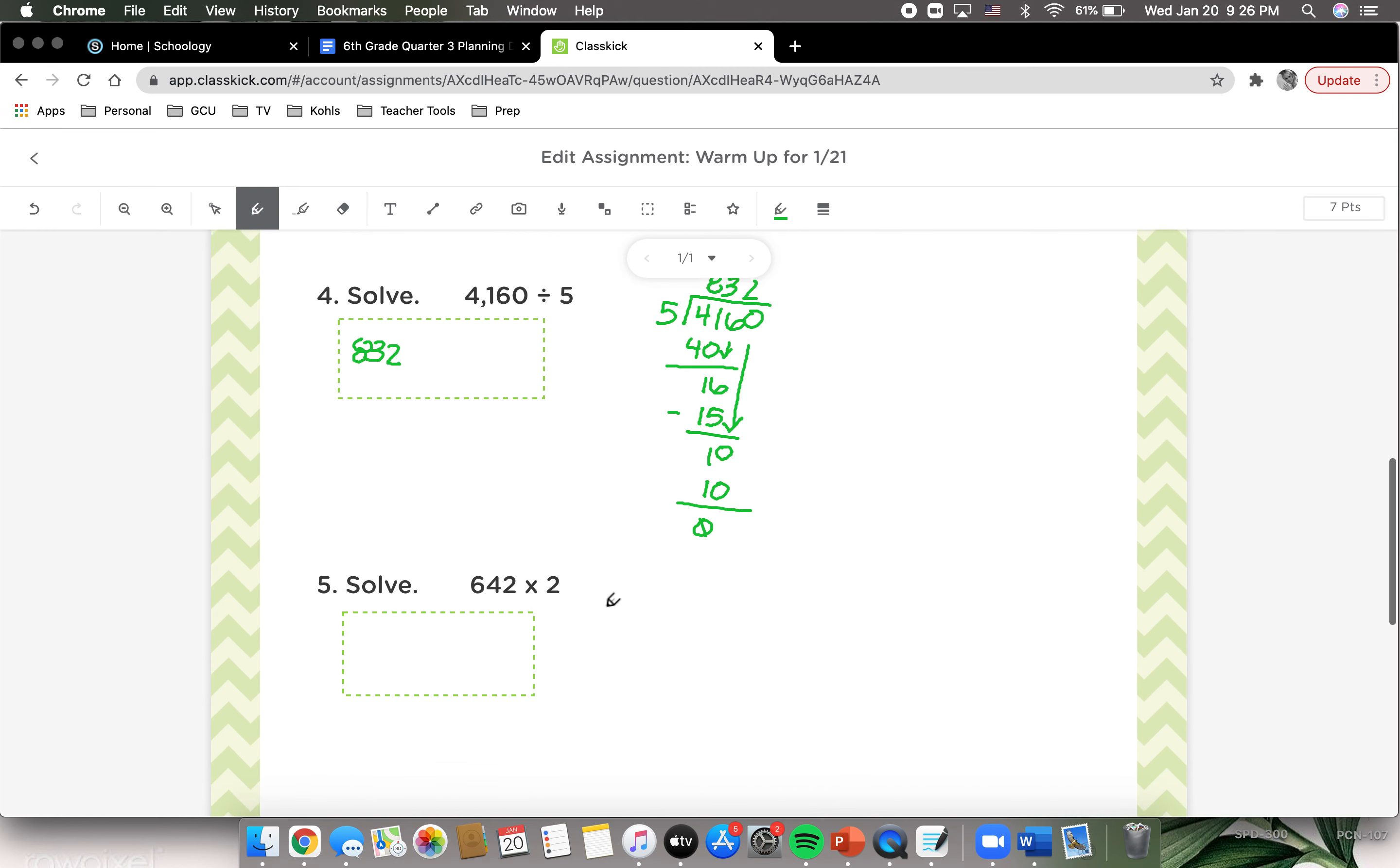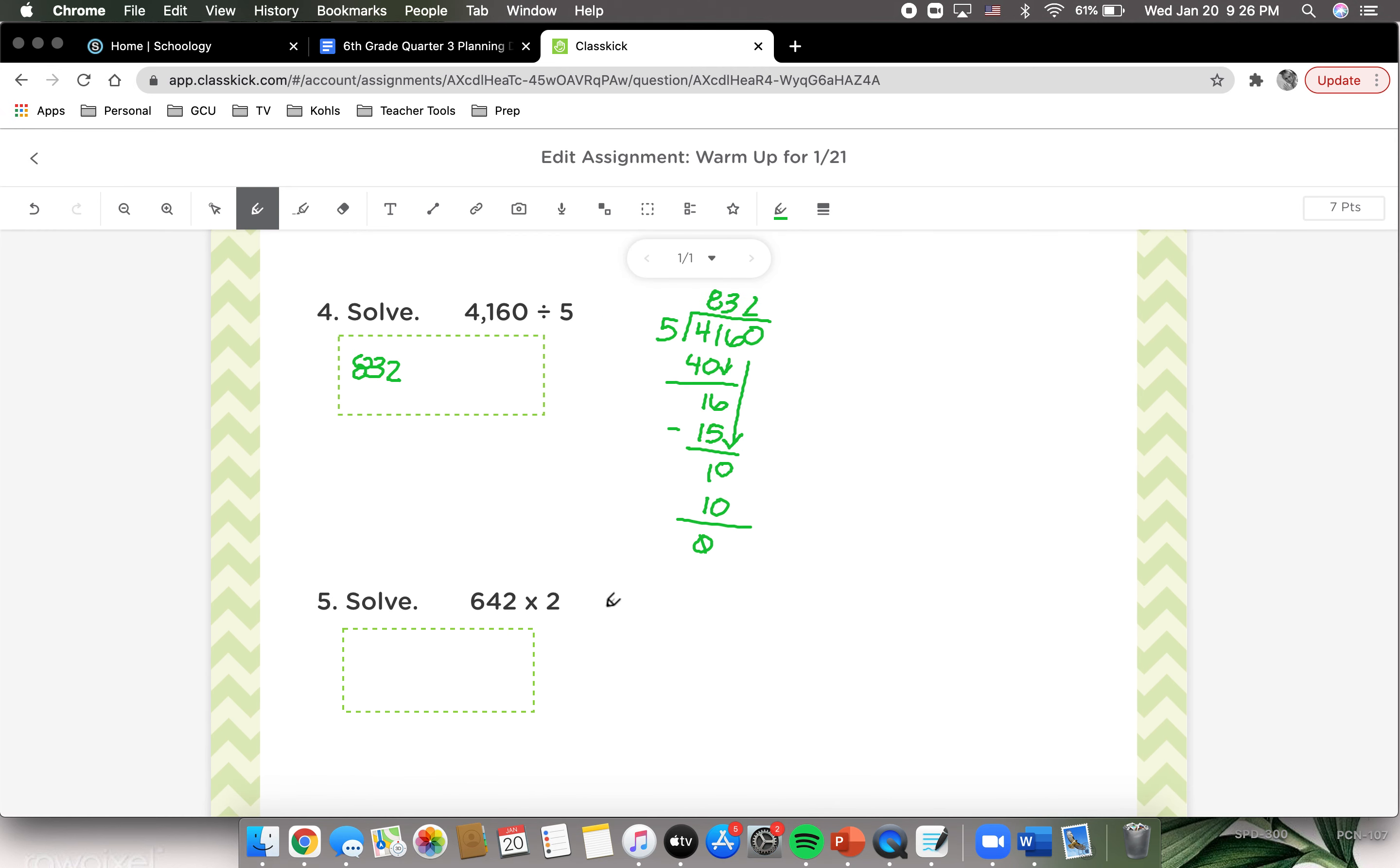Moving on to number five, we are going to solve 642 times two. We're going to multiply two times two, which equals four. Two times four, which equals eight. And six times two, which equals 12. Your answer will be 1,284.